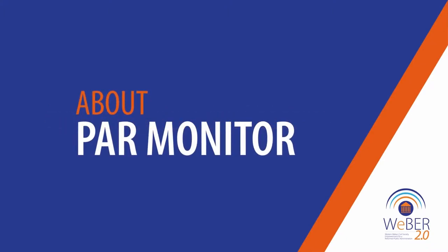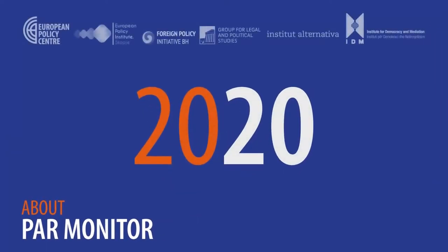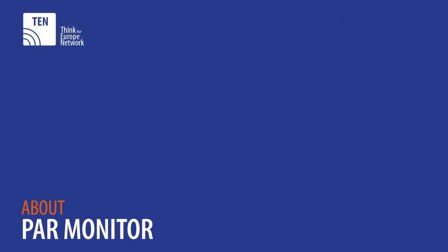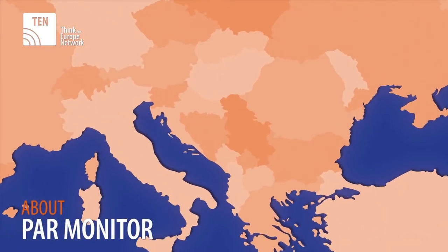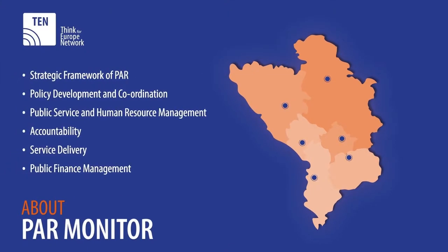The PAR Monitor 2019-2020 is the result of monitoring work performed in 2020 by members of the Think4Europe network. It represents a compilation report of key findings from across the Western Balkans in the six areas of public administration reform defined by the SIGMA OECD principles of public administration. This is the second systematic PAR monitoring done in the region by civil society.